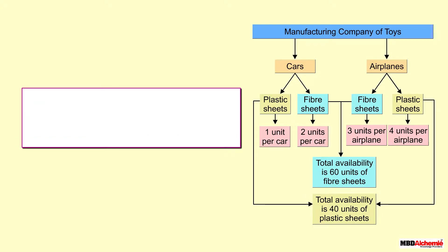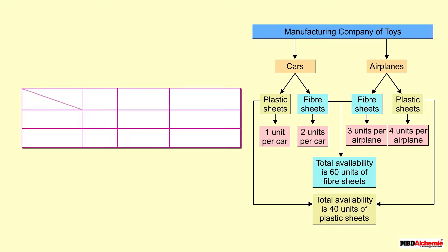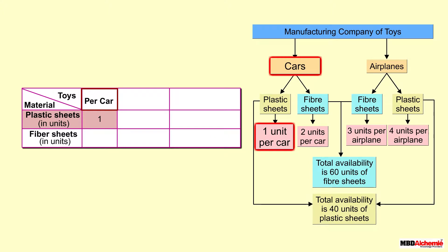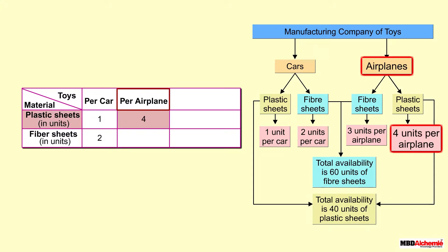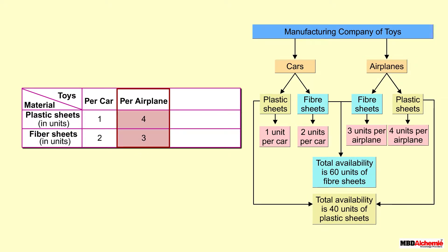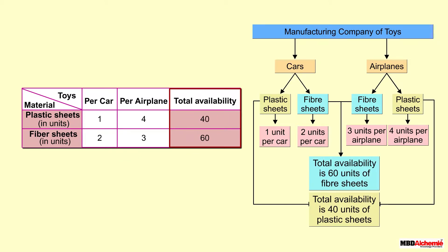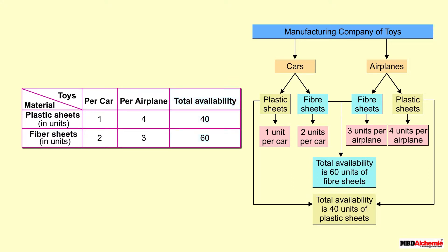Let's represent the given conditions through a table — divide it into three parts horizontally and four parts vertically. Write the names of different kinds of material in the first column. To manufacture a car he needs one unit of plastic sheet and two units of fiber sheet — write those totals in the second column. To manufacture an airplane he needs four units of plastic sheet and three units of fiber sheet — write those in the third column. The total available units of plastic and fiber sheets, 40 and 60 respectively, go in the last column.